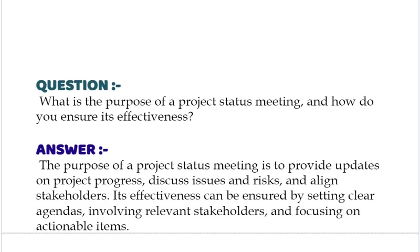Our next interview question is: what is the purpose of a project status meeting and how do you ensure its effectiveness? The purpose of a project status meeting is to provide updates on project progress, discuss issues and risks, and align stakeholders. Its effectiveness can be ensured by setting clear agendas, involving relevant stakeholders, and focusing on actionable items.